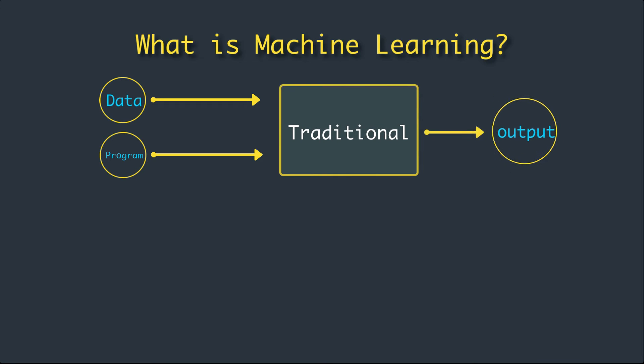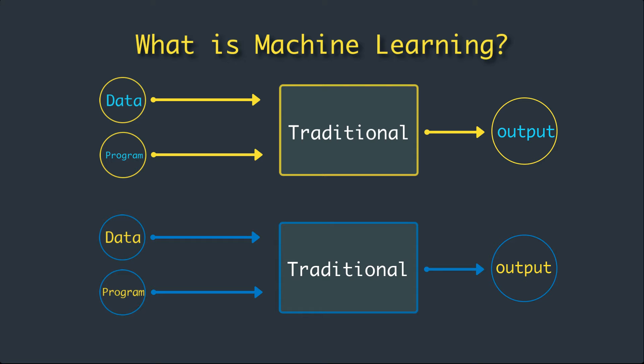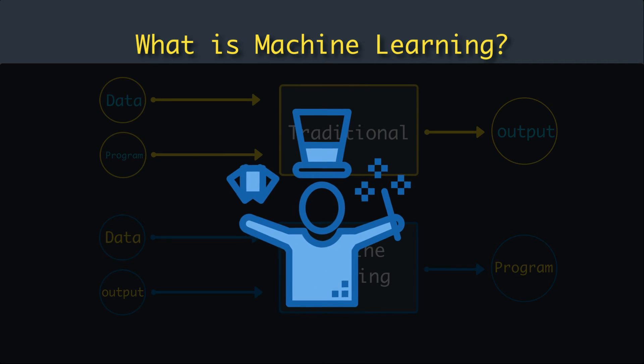If we alter this diagram a little bit, just swap the output and the program, it will become machine learning. So it means in machine learning we just need to pass the data and tell the desired output. It will write the program for us, just like magic. Isn't that easy? It is.